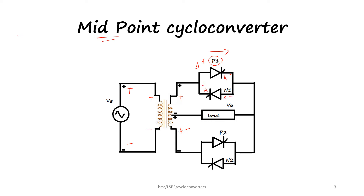During the positive half cycle, thyristor P1 gets plus at the anode and minus at the cathode, so it is forward biased, whereas N1 is reverse biased. If a gate pulse is given to P1, it will start conducting and current will flow from plus through P1 and through the load in the clockwise direction. On the lower part of the circuit, P2 is reverse biased while N2 is forward biased, so if N2 is given a gate pulse it will also start conducting.